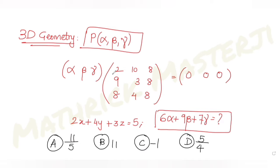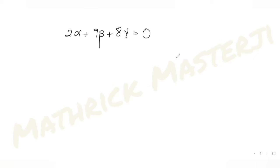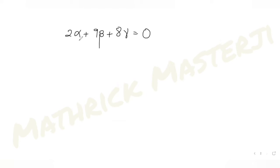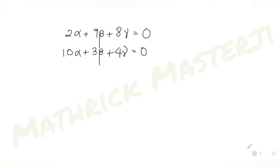Let's multiply the matrices first. Multiplying the first row with the first column gives 2α + 9β + 8γ = 0. Next, multiplying gives 10α + 3β + 4γ = 0. And the last one gives 8α + 8β + 8γ = 0.